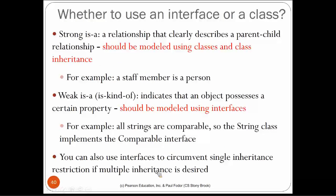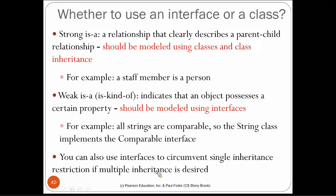It is a personal decision when to use interfaces versus classes. If the relationship is a strong parent-child 'is-a' relationship — like 'a staff member is a person' or 'a circle is a geometric object' — use classes. If it is a weaker relationship indicating that an object possesses a certain property or behavior — like being comparable, cloneable, or colorable — then model it using interfaces.